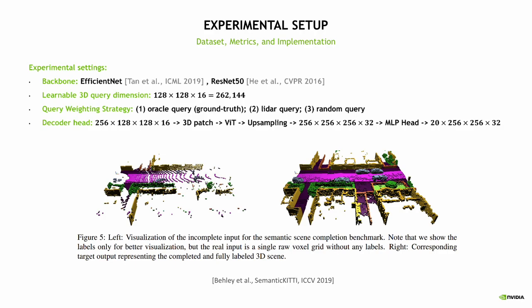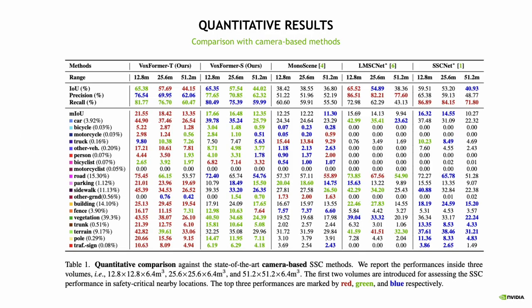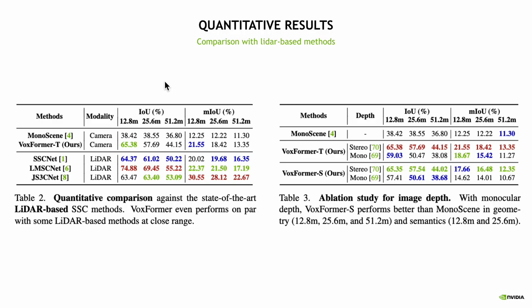In our experimental setup, we utilize ResNet as our backbone and verify our method on the SemanticKITTI dataset. Compared to MonoScene, our method is much better, especially in the short-range regions as shown in the figure. Our VoxFormer equipped with temporal information achieves best performance across different spatial regions and categories. We also compare our method with some LiDAR-based methods, and from Table 2 our method has comparable performance even against some LiDAR-based approaches.